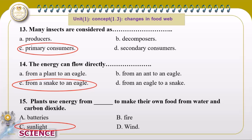Energy flows directly — look at the choices: plant to eagle is wrong because an eagle can't eat a plant; eagle to snake is wrong because a snake can't eat an eagle. The correct one is from snake to eagle, because the eagle eats the snake.